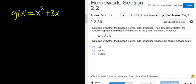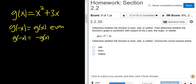So when you plug in negative x, if you just get back g of x, it's even. And when you plug in negative x, if you get back negative g of x, it's odd.